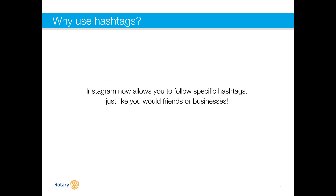Another benefit, especially on Instagram: Instagram allows you to follow specific hashtags, in the same way you would follow a friend or business account. You can search 'people of action' within Instagram and follow hashtag people of action, so when people post that hashtag, the content appears in your newsfeed. That functionality isn't available on Facebook, but it is on Instagram. So if your club uses hashtag rotary, hashtag rotary international, or hashtag people of action, people subscribed to those hashtags may see your content.